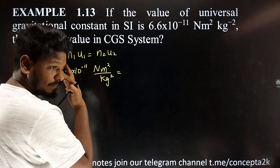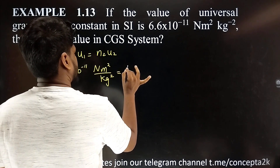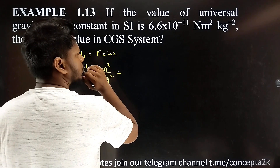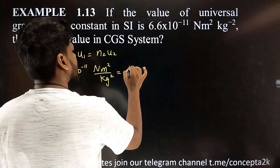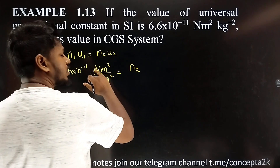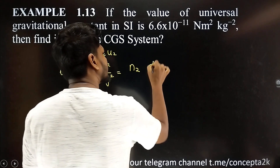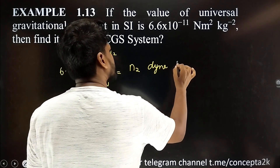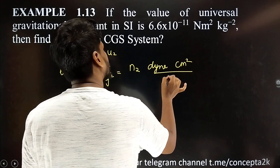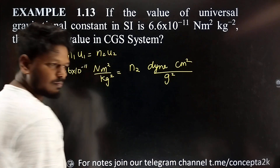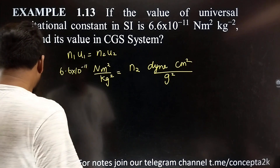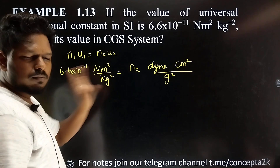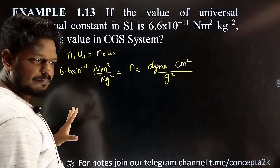In CGS units, we measure force in dyne instead of Newton, length in centimeters instead of meters, and mass in grams instead of kilograms. We will write out the simple calculations using the relationships between Newton and dyne.